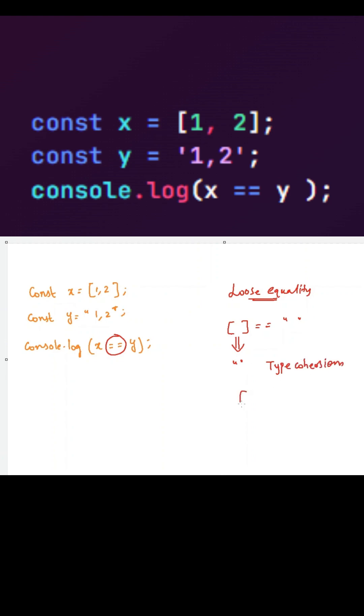So it will internally use this dot toString method on this array and it will try to convert this into a string. So our expression will become array of 1 comma 2 double equal to string 1 comma 2.